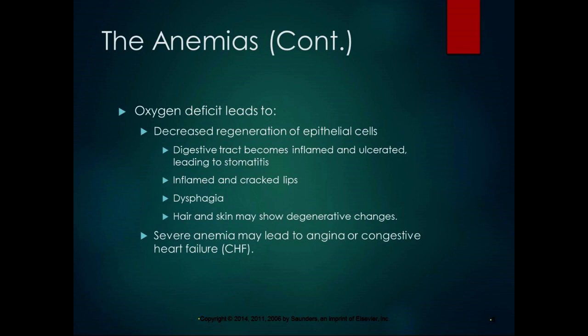The low hemoglobin level may result from a declining production of the protein, a decrease in the number of erythrocytes, or a combination of these factors. A lot of times anemias are classified by typical cell characteristics — cell morphology — or by etiology, meaning what's causing the anemia.